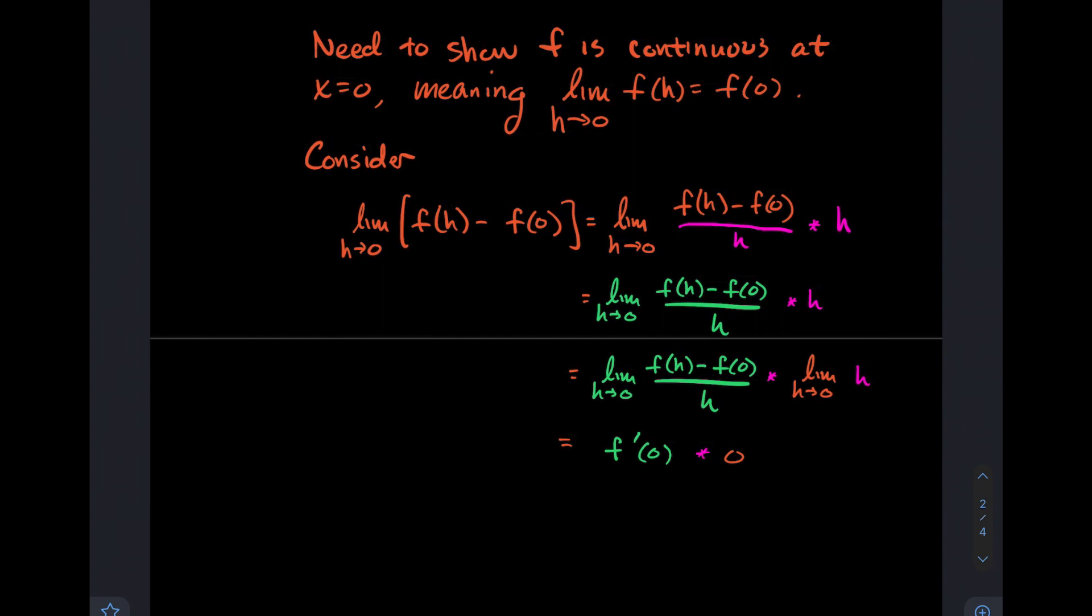Here is where now I'm going to take the limit of each one and I get f'(0) times 0, which of course is just 0.